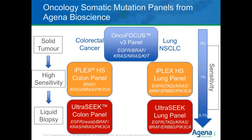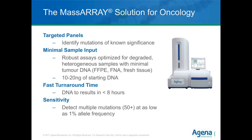With the MassArray, we are releasing new targeted panels to identify mutations of known significance in both colon and lung samples. We've completely minimized sample input from a single PCR reaction. We have robust assays optimized for highly degraded, low-frequency heterogeneous samples. Fast turnaround time — completely automated post-PCR processing and mass spectrometry analysis delivers results in less than eight hours. We're able to detect more than 50 mutations in these panels down to as low as 1% mutation frequency. I'll now hand it to Dr. Sutton to explain how these panels perform in a clinical environment.